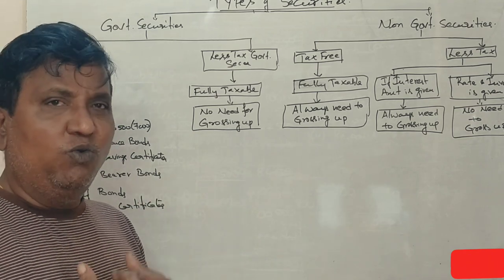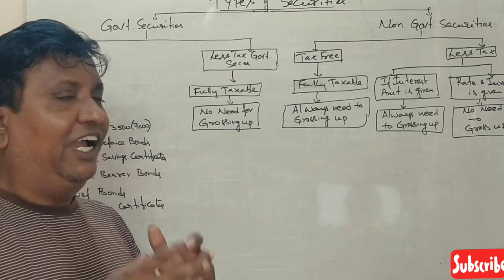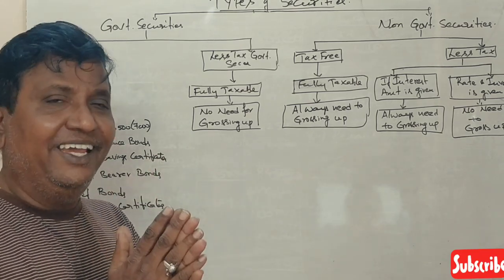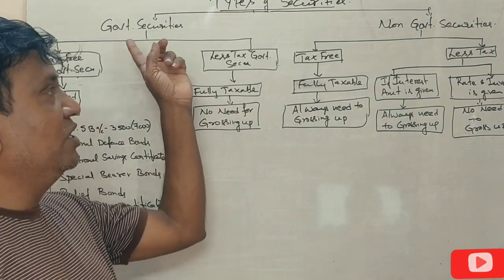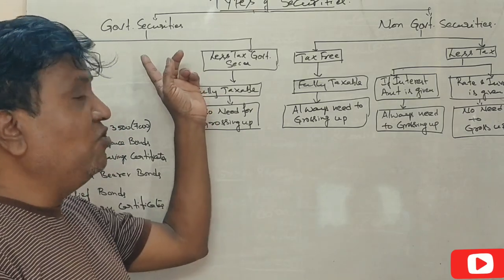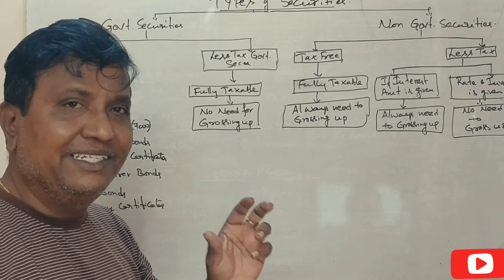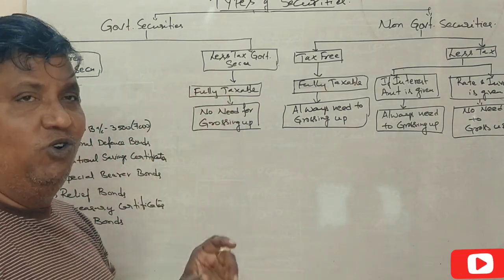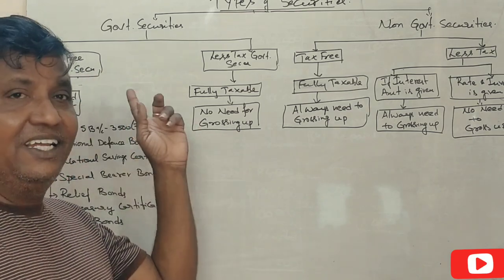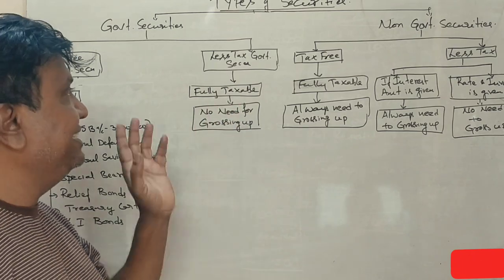You will be taxed by tax treatment. Basically this is the first thing. The second thing is that he would give two different securities: government securities and non-government securities. There are five things — tax-free government securities and less tax-free government securities.